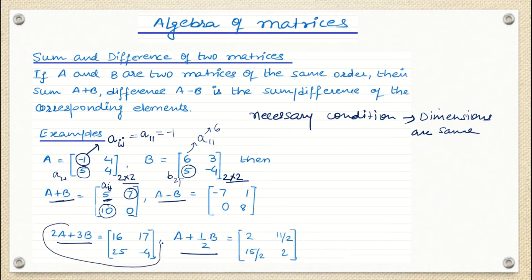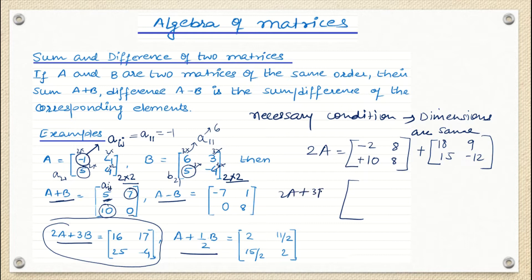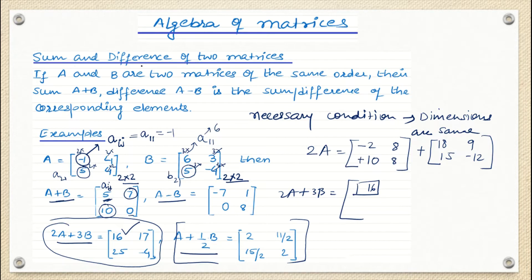For 2A plus 3B, first I perform the scalar multiple of matrix A. 2A means multiplying 2 to each element: minus 2, 8, 10, 2, 4, 8. Then 3B means multiplying 3 to each element of matrix B: 18, 9, 15, minus 12. The first element of 2A plus 3B is minus 2 plus 18, which is 16. Similarly you can compute the rest, and this same method applies to A plus half B.